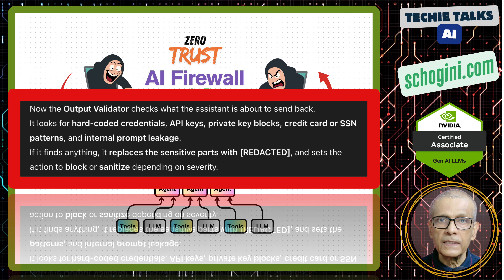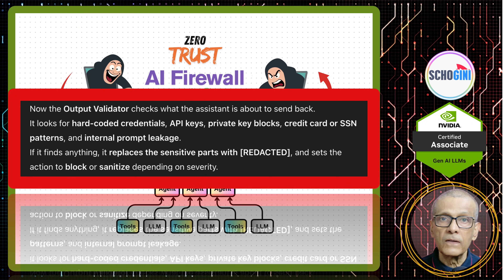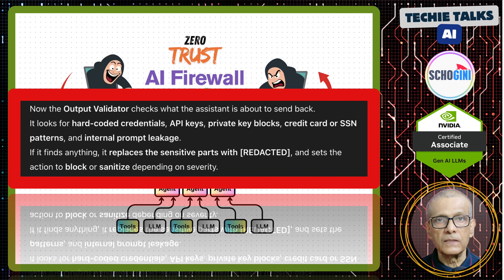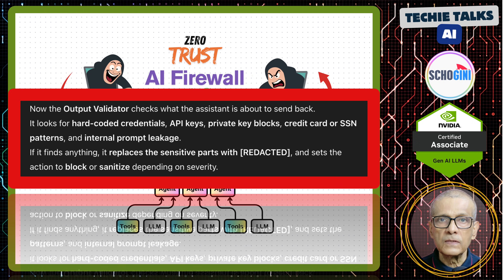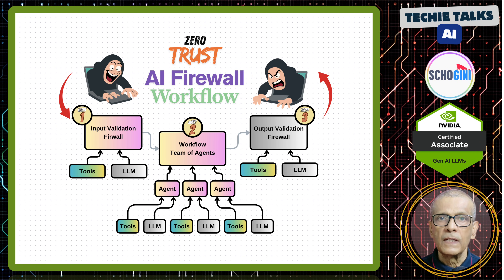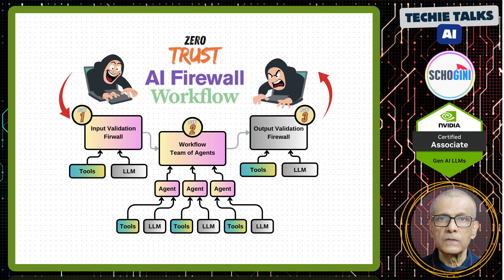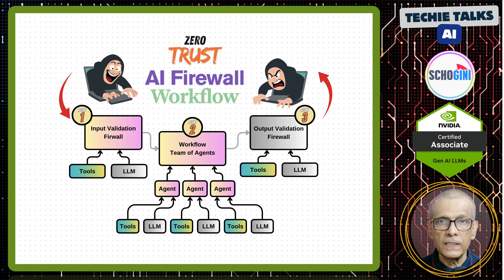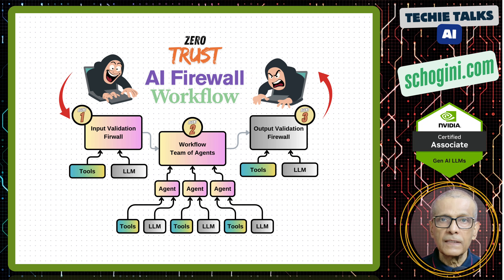Output validator: the output validator checks what the assistant is about to send back. It looks for hard-coded credentials, API keys, private key blocks, credit card or SSN patterns, and internal prompt leakage. If it finds anything, it replaces the sensitive parts with 'redacted' and sets the action to block or sanitize depending on severity. For example, if the assistant produced a key like 'API_key = SK-ABC123...', the output guard would mark it malicious, redact it to 'API_key = [REDACTED]', and trigger block and alert — so it never reaches the user.